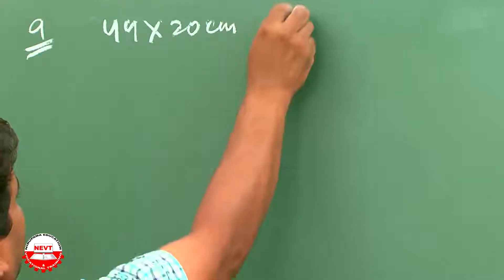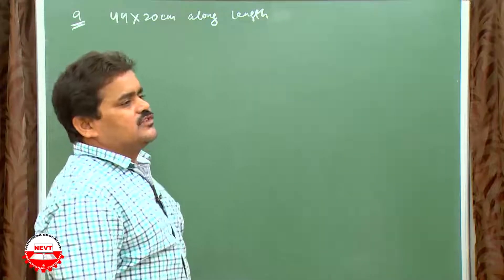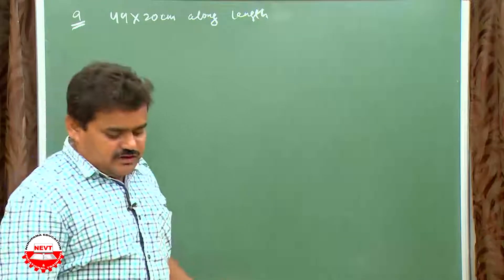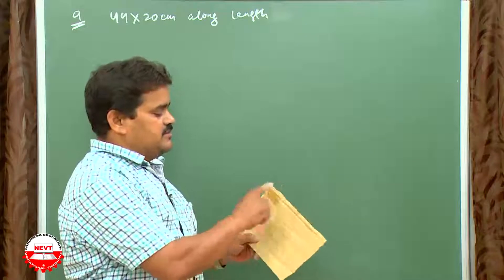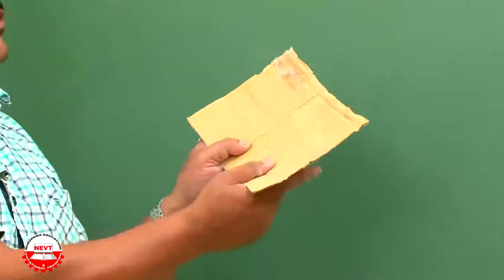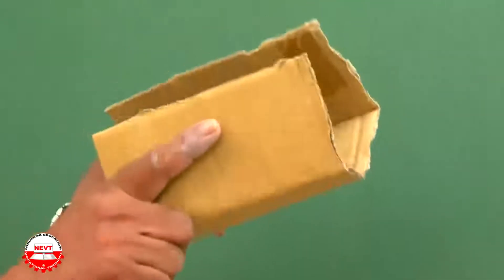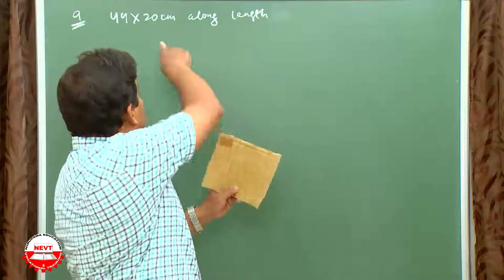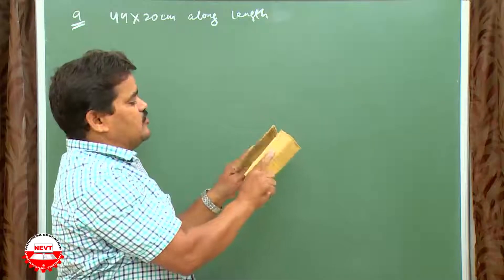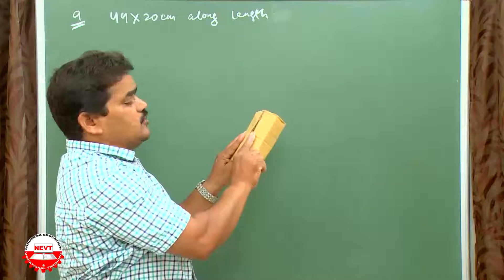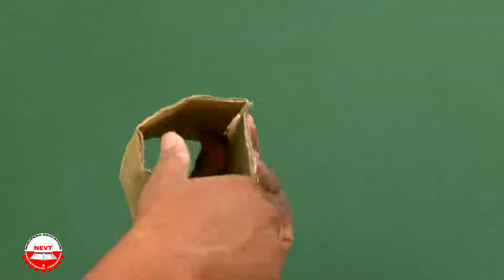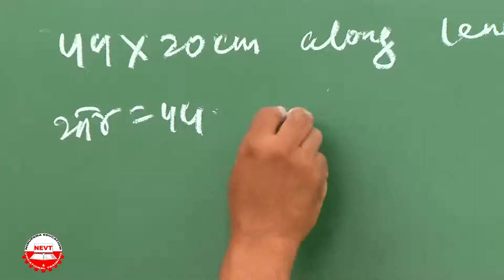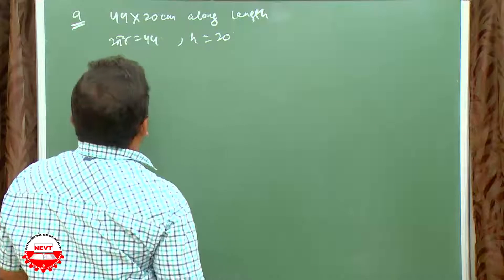A rectangular sheet of paper 44 × 20 cm is rolled along its length to form a cylinder. Find the volume. When rolled along the length, the length 44 becomes the circumference and the breadth 20 becomes the height of the cylinder.